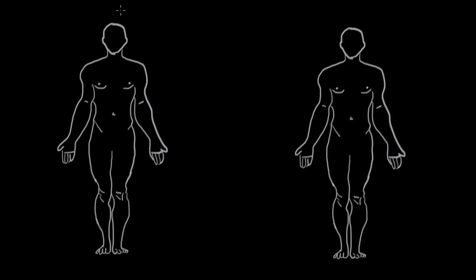In talking about the different symptoms between osteoarthritis and rheumatoid arthritis, I think my obsession with color coding will really pay off. We'll have red for rheumatoid arthritis and green for osteoarthritis.